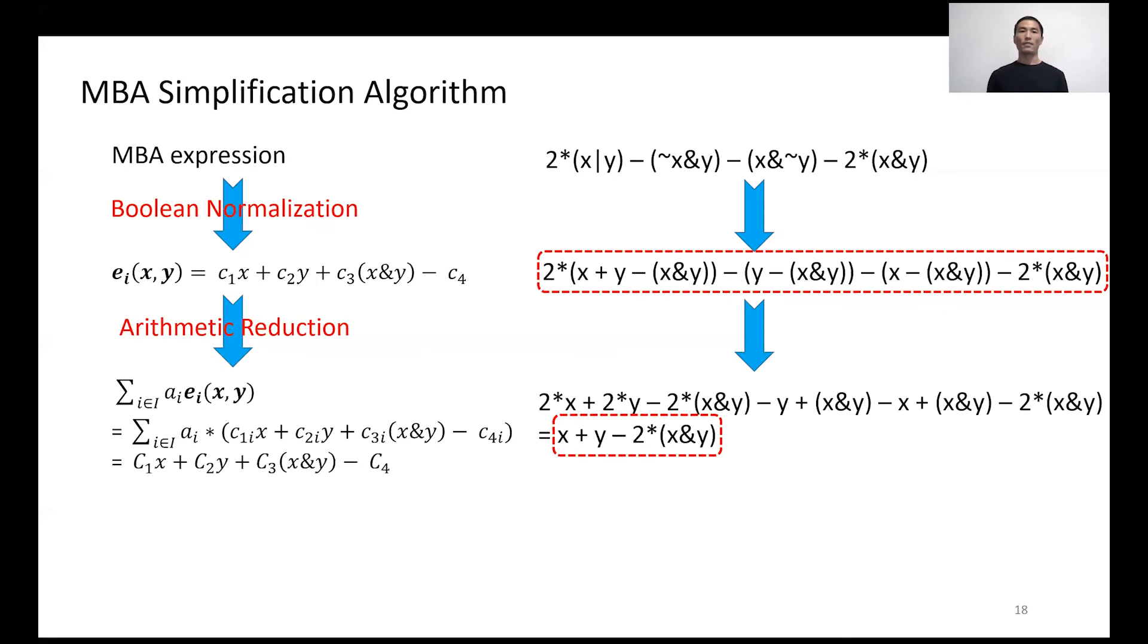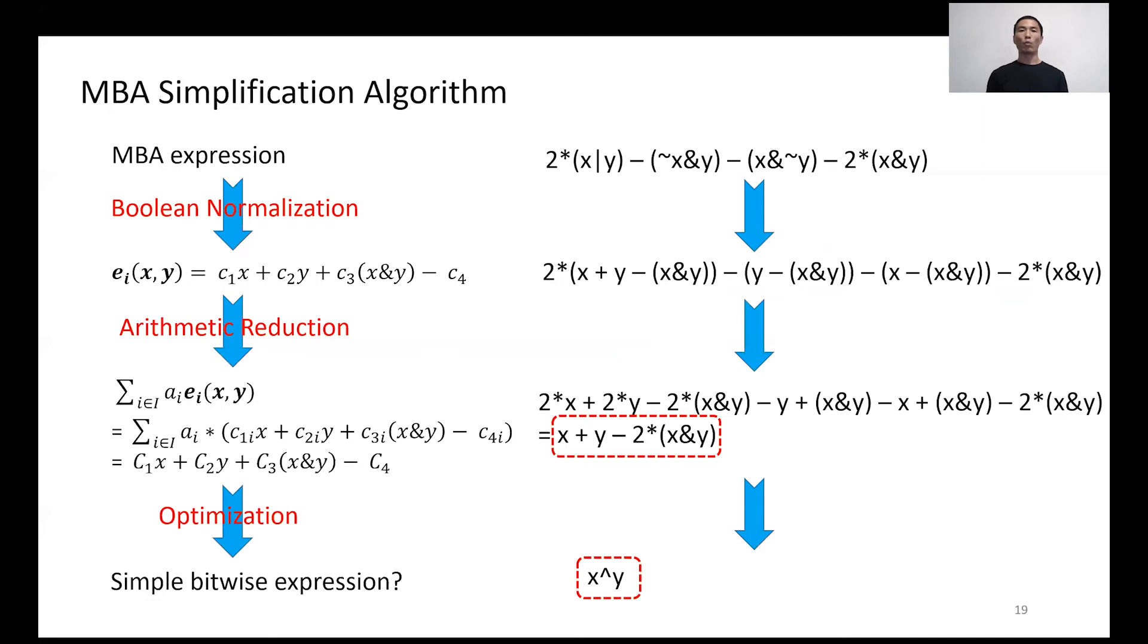At last, the algorithm tries to match the normal MBA form with the simple bitwise expression. For instance, X plus Y minus 2 times X AND Y is reduced into a simple expression, X XOR Y.